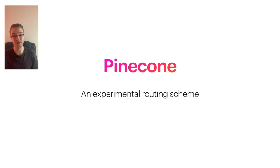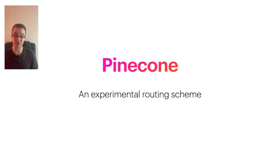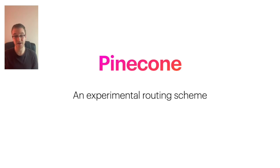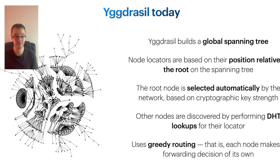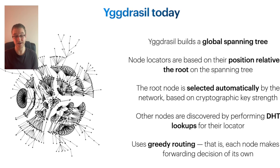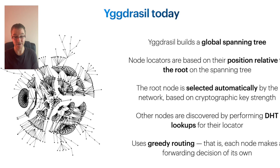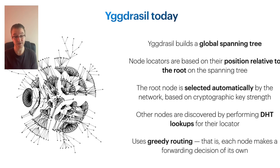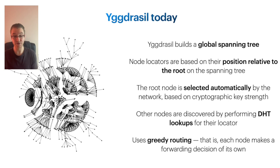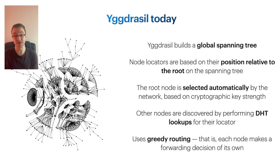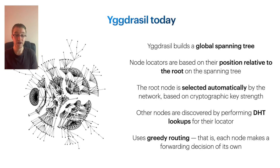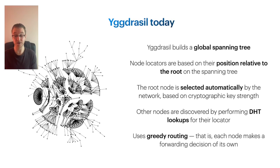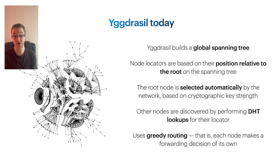I briefly mentioned Pinecone there — so at this point I'd like to formally introduce Pinecone. Pinecone is a research project of ours to develop an overlay routing scheme for P2P Matrix. Pinecone is heavily inspired by Yggdrasil and shares much of the same design. It works by building a global spanning tree of which all nodes are a part, and then assigns them coordinates based on their position relative to the root of the spanning tree. A distributed hash table is used to assist one node in finding the coordinates of another node. A core design choice is that it is a greedy routing scheme, where every node makes a forwarding decision based on local knowledge only, and the protocol only allows forwarding traffic in a direction that takes it closer to its destination.